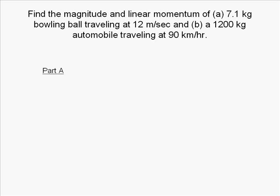In part A of this problem, we want to find the momentum of a 7.1 kilogram bowling ball traveling at 12 meters per second. First thing to do to solve the problem is to list the variables. The mass is 7.1 kilograms and the velocity is 12 meters per second.